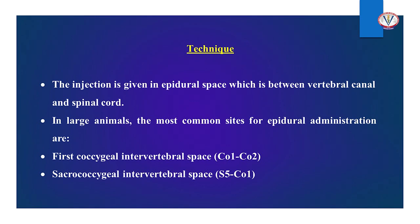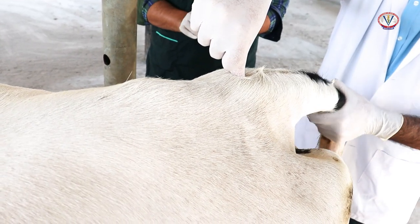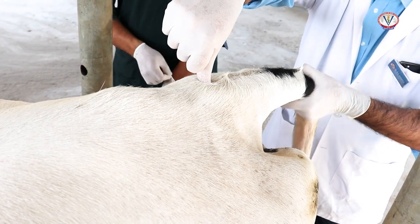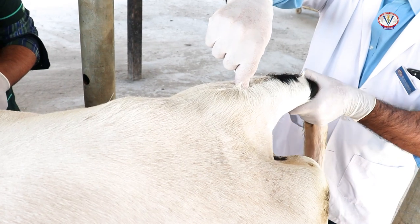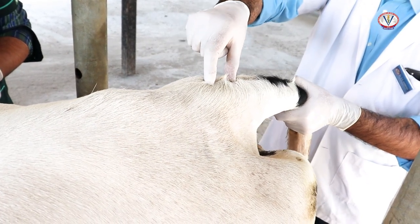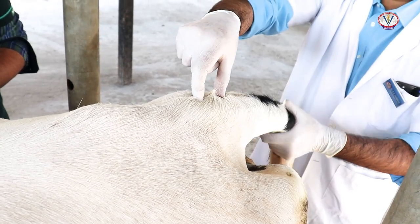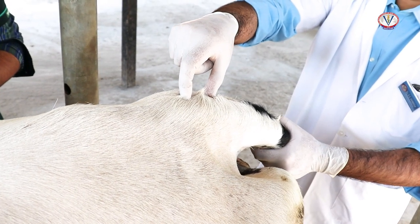The injection is given in the epidural space, which is between the vertebral canal and spinal cord. In large animals, the most common sites for epidural administration are the first coccygeal intervertebral space (C1 and C2) and the sacrococcygeal intervertebral space (S5 and C1). First, restrain the animal properly in a standing position, then locate the site of injection by moving the thumb downward from the sacrum while moving the tail upward and downward in a pump-like manner. The first proximal moving space easily palpated is the preferred location.